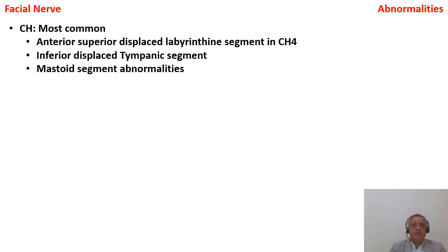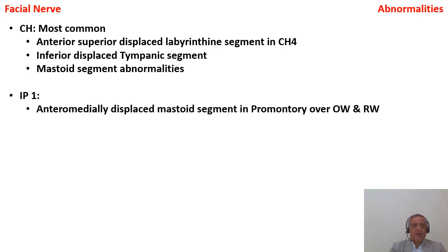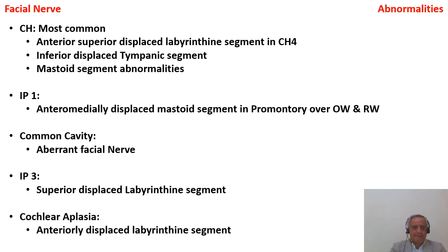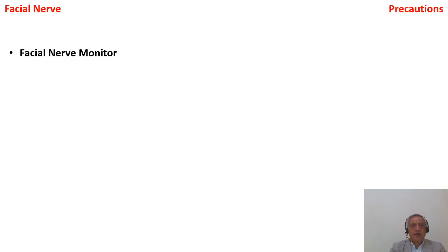Facial nerve abnormalities: in all cochlear hypoplasias there is displacement of the labyrinthine segment and, more importantly, inferior displacement of the tympanic segment toward the oval or round window. In IP1 there is displacement of the mastoid segment. In common cavity there is an aberrant facial nerve course. In IP3 the labyrinthine segment is superiorly displaced, which is away from the surgical field and does not make surgery more difficult. In cochlear aplasia there is abnormality of the labyrinthine segment. When facial nerve problems are suspected, use a facial nerve monitor and be ready for subtotal petrosectomy.